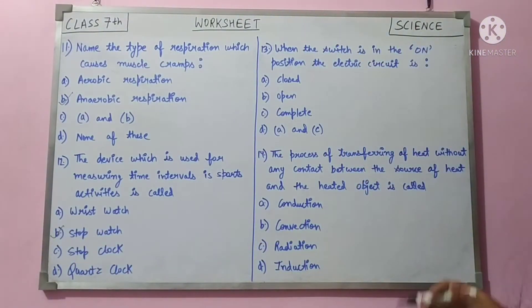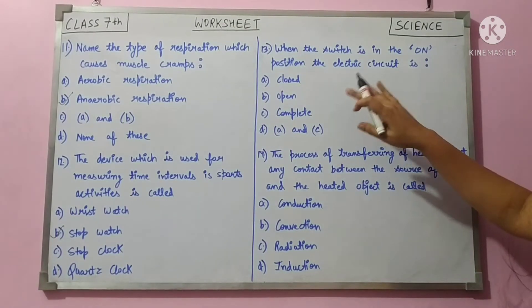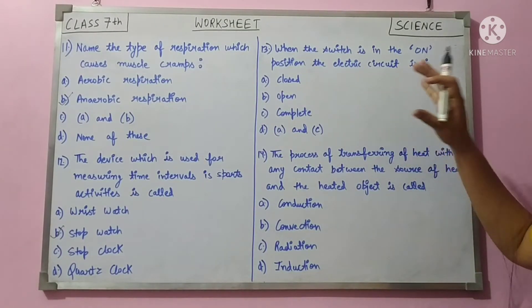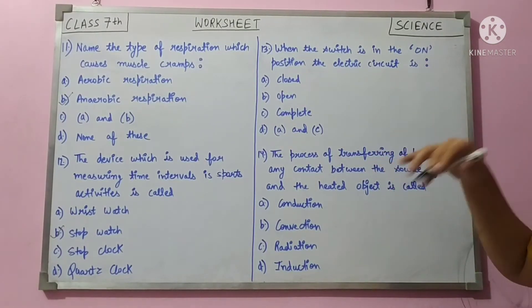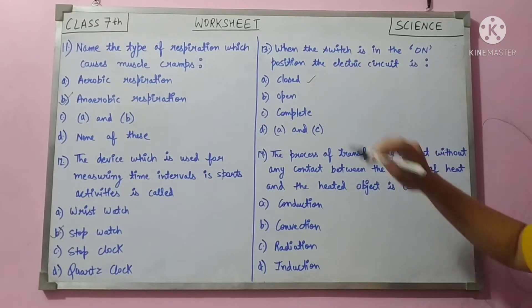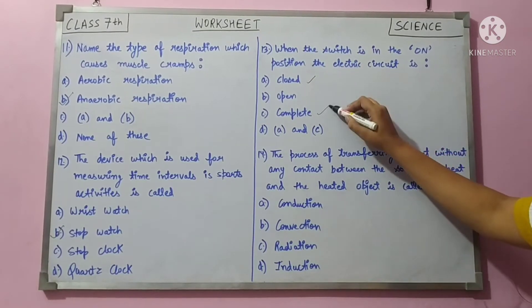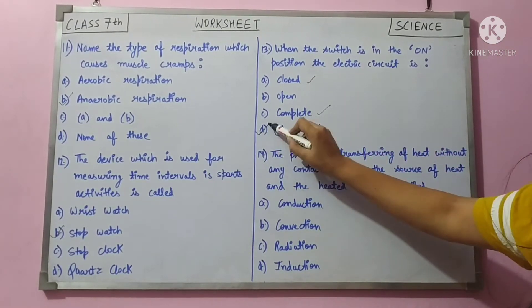Question 13: when the switch is in the ON position, the electric circuit is closed and complete, so the bulb will glow. Answer is both A and C — closed and complete.